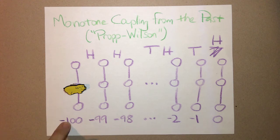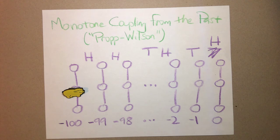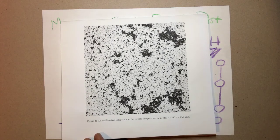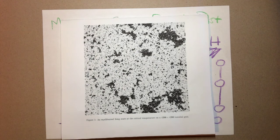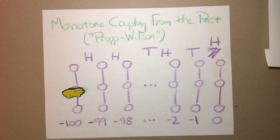You can ask: what if we hadn't stopped at negative 100, but instead had gone back to negative 128, negative 256, and so on? Well, in a certain sense we are sampling from a process that we can think of as running from time minus infinity to time zero. That's where this picture comes in, because it is sampled from the stationary measure of a certain Markov chain, which you could get if you ran the system for infinite time. The innovation here is that instead of running from time zero to time infinity, you run the simulation from time negative infinity to time zero and figure out what that should mean.